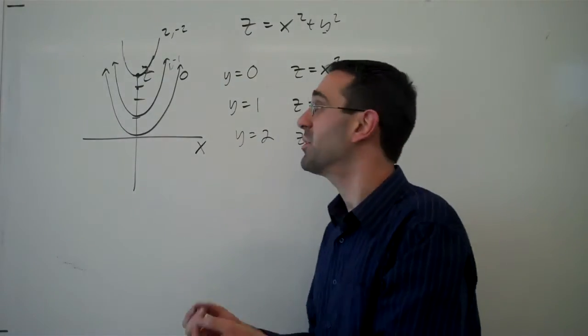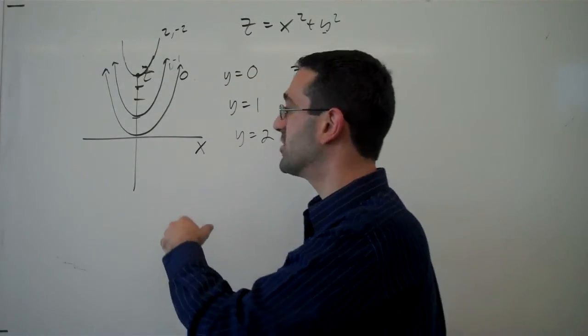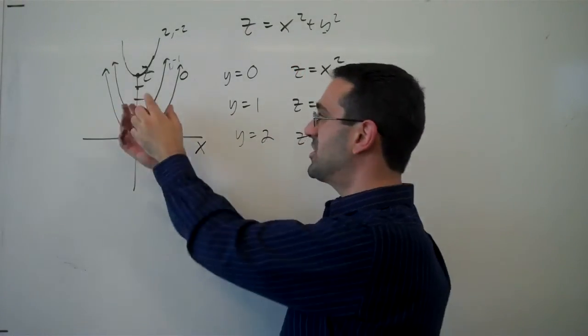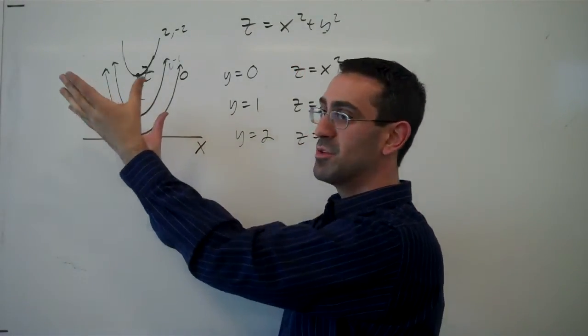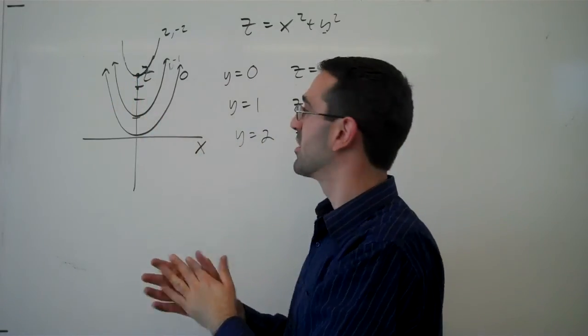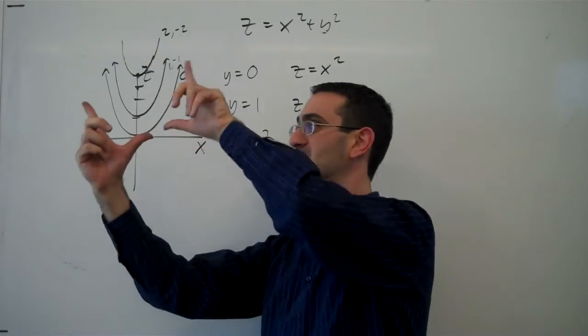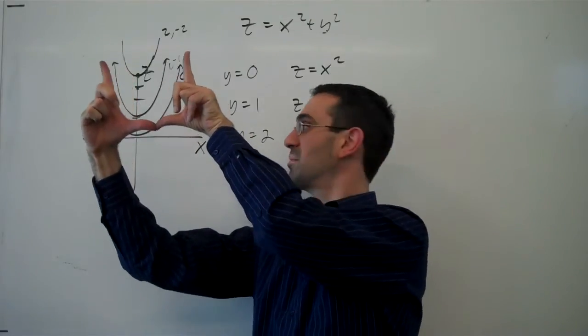Now, visually, you have to imagine that if we introduce the y-axis coming out of the board, imagine each of these curves being moved to their proper y values. So a y value of 0 would be about here. So we imagine sort of this quadratic shape about here.